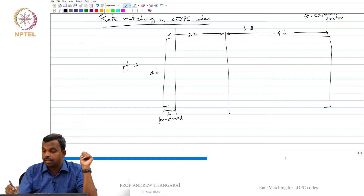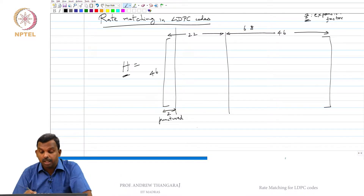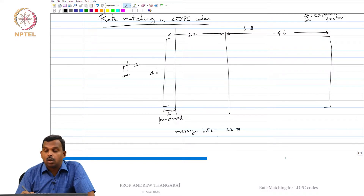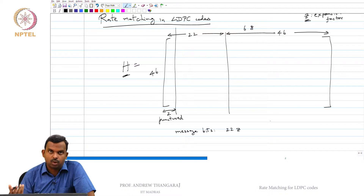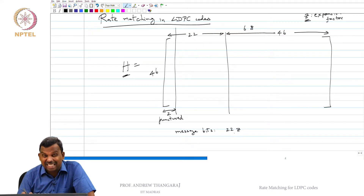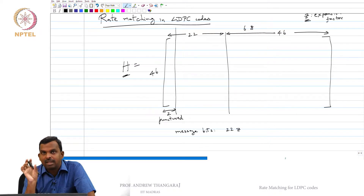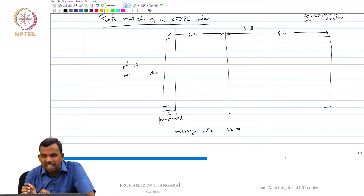Once you fix the expansion factor Z and the parity check matrix, the number of message bits becomes 22 times Z. For example, with base graph 1 and Z equals 16 or Z equals 24, the message bits are 22×16 or 22×24. The actual number may be slightly short, so the standard picks Z to minimize the shortfall. If there is a shortfall, it falls within one Z block, and those bits are set to zero — that is shortening.